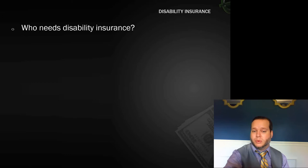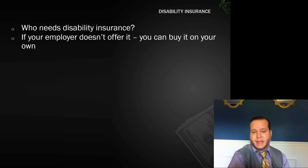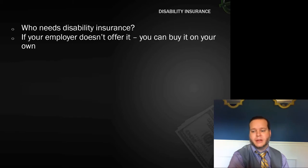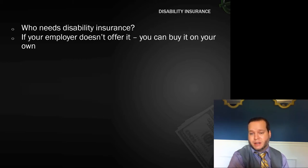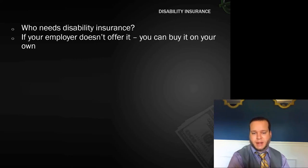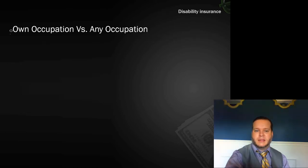A lot of times you can get disability insurance through your employer's benefits package — sometimes you have to pay for it, sometimes not, depending on how the employer has it set up. Before you accept a job, look at the benefits package and see what it says about disability insurance. That said, even if they offer it or don't, you can also go out and buy your own disability insurance — just Google and shop for it, compare providers and get rates.